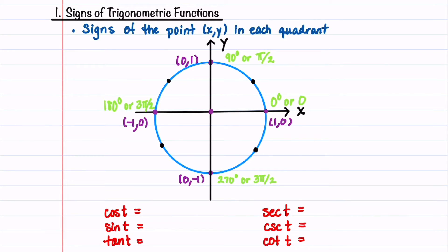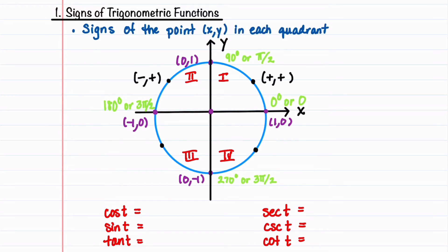Let's begin by writing down the quadrants in the unit circle pictured here. This is our first quadrant. To the left is our second quadrant. Below the second quadrant is our third quadrant. And to the right of the third quadrant is our fourth quadrant. In quadrant one, x is positive and y is positive, so we'll indicate that by a plus plus. In quadrant two, x is negative and y is positive, so that's a minus plus. In the third quadrant, both x and y are negative, so we have a negative negative. And in the fourth quadrant, x is positive but y is negative, so that gives us a plus and a minus.